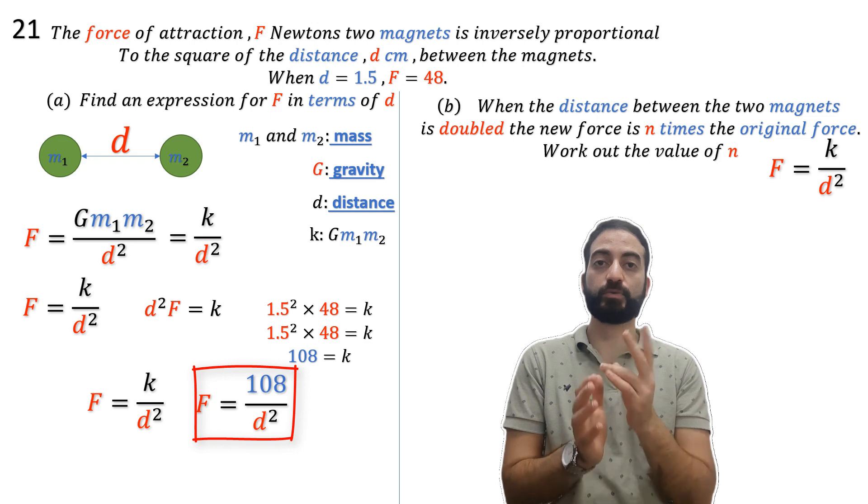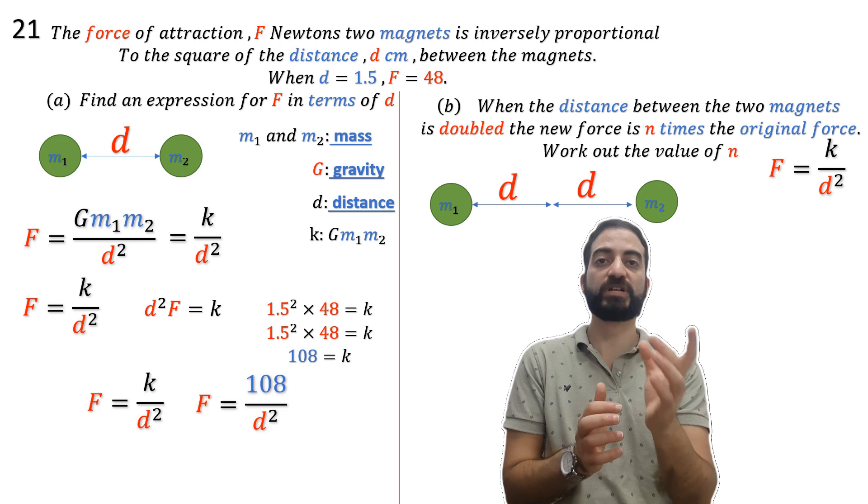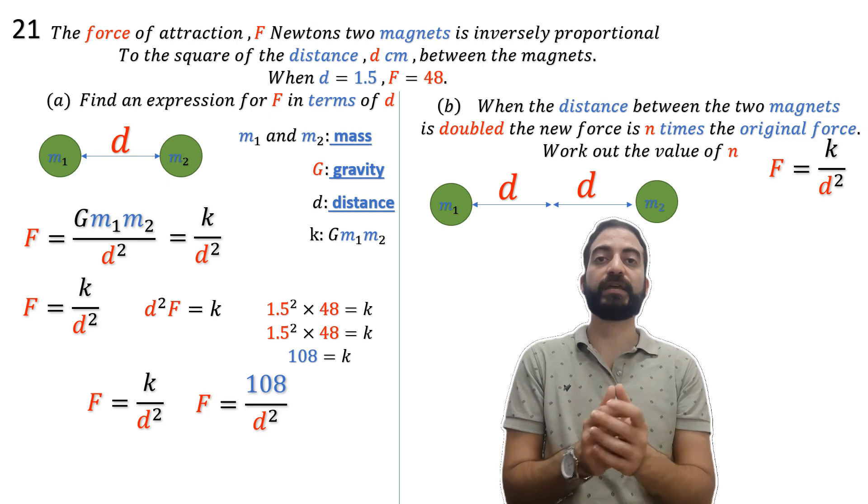When the distance between the two magnets is doubled, the new force is n times the original force. Work out the value of n.